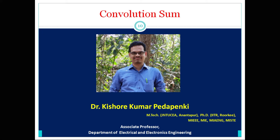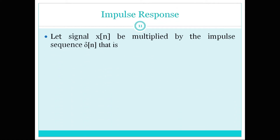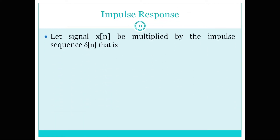Before going to the convolution sum, we should definitely know the impulse response. Let us see what is meant by an impulse response in a very short manner, because we have already completed a video on impulse response. So let me simply review the same. If the signal x of n is multiplied with the impulse sequence delta of n, then x of n times delta of n equals x of 0 times delta of n.